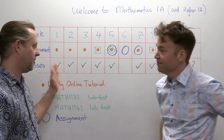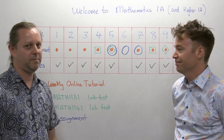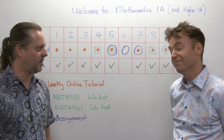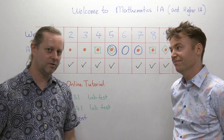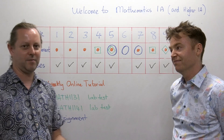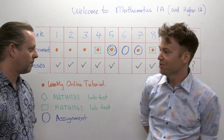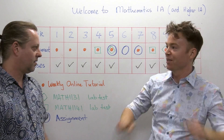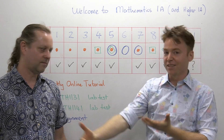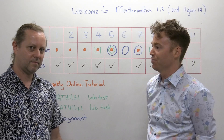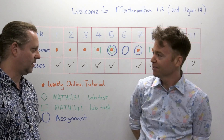By the end of the term you should be pretty close to passing the course, so when you go into the exam you're not stressed about whether you're actually going to pass — you're more thinking about whether you're getting a pass, credit, distinction, or whatever. We've spread the stress of a big final exam throughout the term into many smaller, easier, multiple-attempt events.